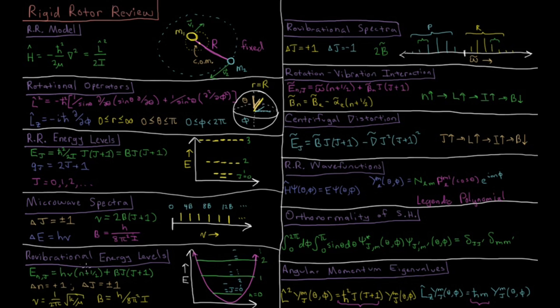We have also ro-vibrational spectroscopy. We have ro-vibrational energy levels where we are interested in both the vibrational energy and the rotational energy simultaneously. For ro-vibrational spectroscopy we have the selection rule that for absorption the change in the vibrational quantum number is plus 1, and the change in the rotational quantum number is plus or minus 1.